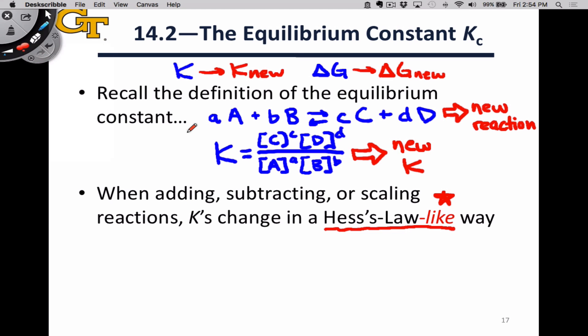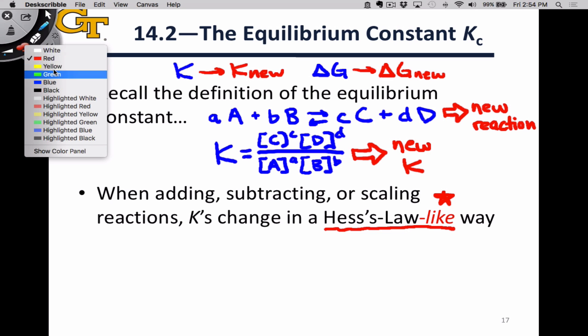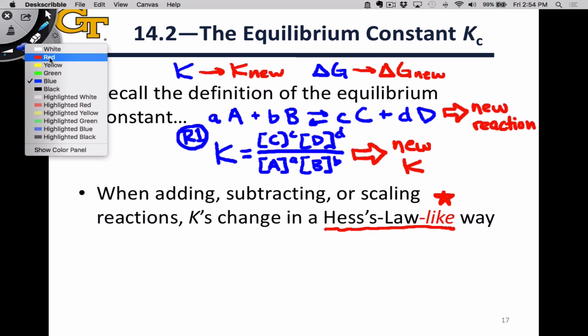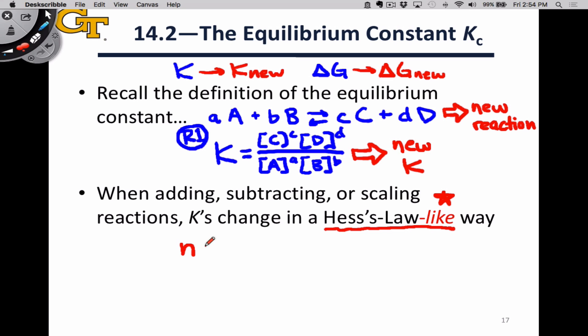So let's look at some of the things you can do with a chemical reaction. And let's actually label this reaction R1. If I take reaction 1 and I scale it by a certain factor, let's call that n, if I scale all the coefficients, then as it happens, the new equilibrium constant, the equilibrium constant for this scaled reaction is equal to the original equilibrium constant raised to the power of n, whatever that scaling factor is.